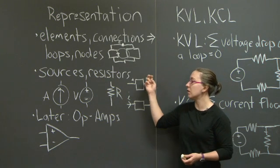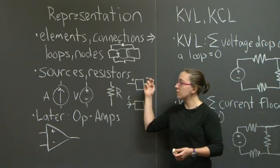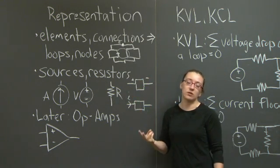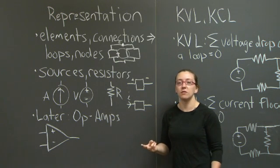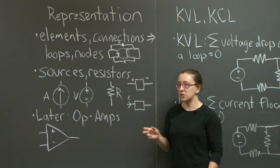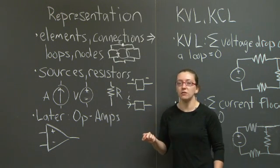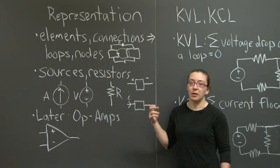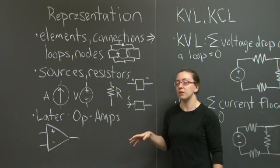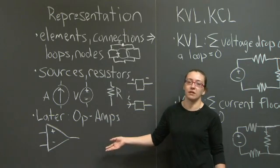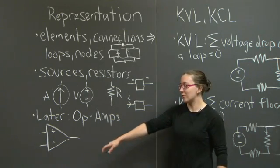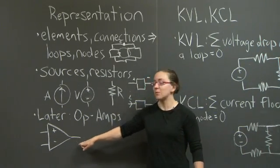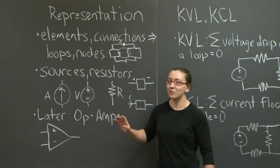In this course, we're going to focus on independent sources and resistors as the two major kinds of elements in our circuits. We'll also use potentiometers, which are resistors you can adjust, and op-amps. Note that the op-amp symbol looks a lot like the block diagram symbol for a gain — and that's intentional, which we'll cover later.